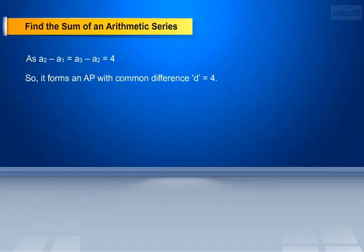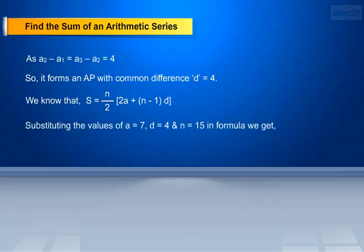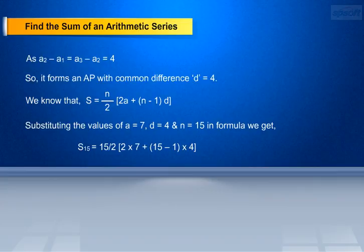We now find the sum of first 15 terms of the given AP. As we know that S equals n by 2 into 2a plus n minus 1 into d, we substitute the values a equals 7, d equals 4, and n equals 15 in the formula. We get S15 equals 15 by 2 into 2 into 7 plus 15 minus 1 into 4.